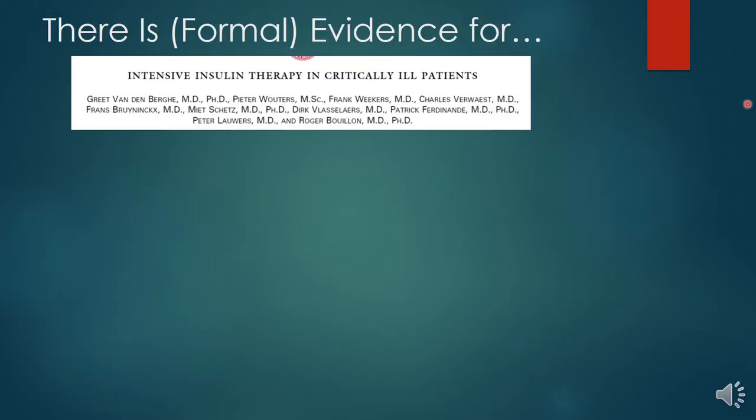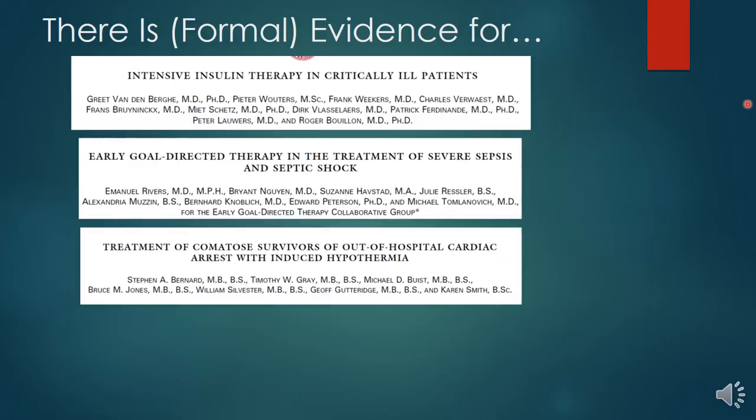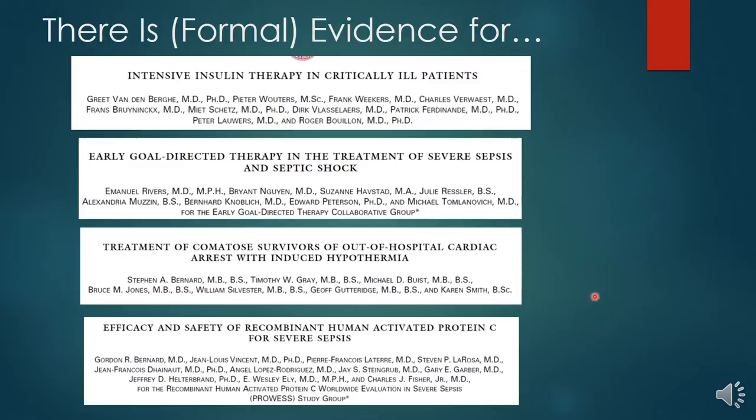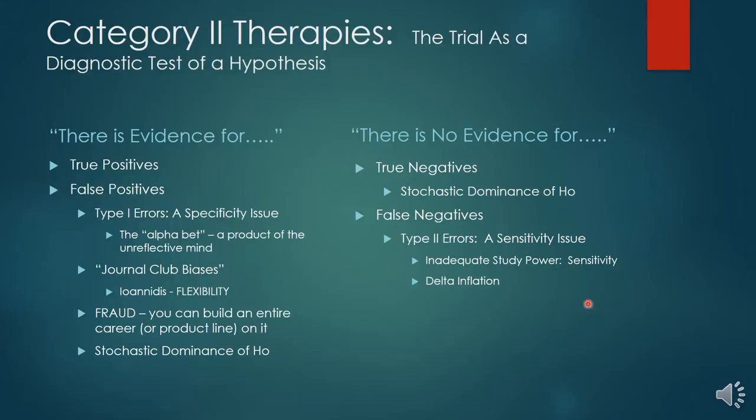But there can be problems with knowledge that is based on formal evidence. Ten or fifteen years ago we thought we had evidence for intensive insulin therapy, for early goal-directed therapy, for hypothermia after cardiac arrest, and for drotrecogin alpha in severe sepsis. So it is clear that obtaining formal evidence does not necessarily give us knowledge — which epistemologists consider to be a justified true belief.